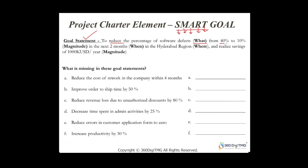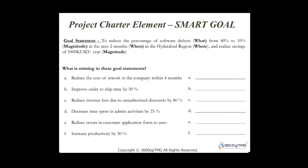Now with that reference, what is missing in these example goal statements? 'Reduce the cost of rework' — the what is there but the magnitude is missing; by what percentage do you want to reduce it? 'In the next four months' gives the when. 'In a specific company' gives the where. But the impact — dollars or benefits — is not available. 'Improve order-to-ship time by 50 percent' — magnitude is there, but the time commitment and magnitude of savings are missing.